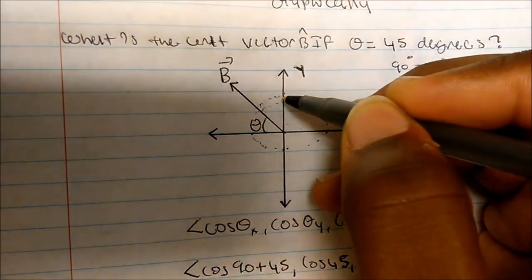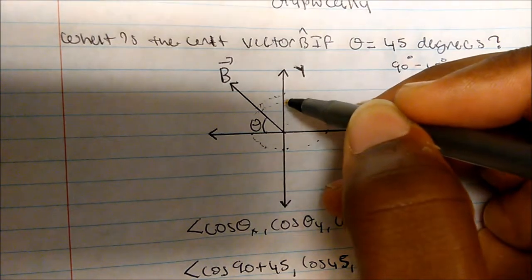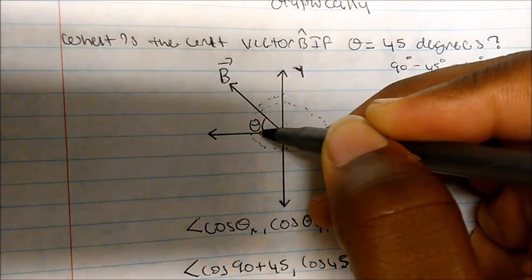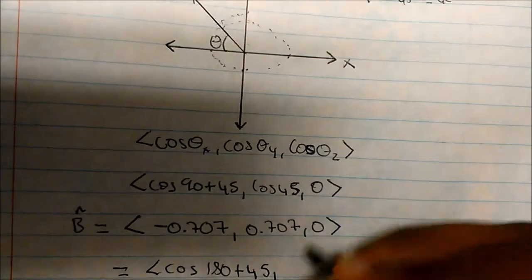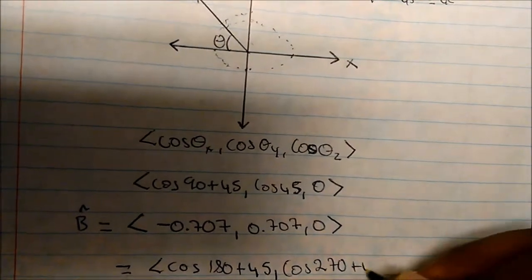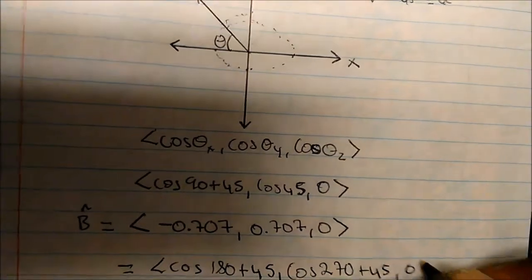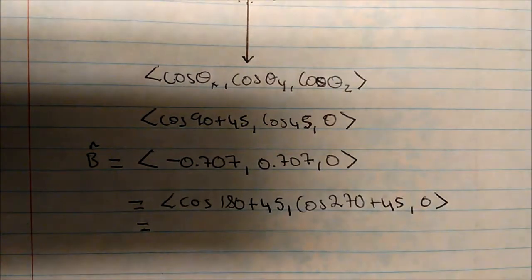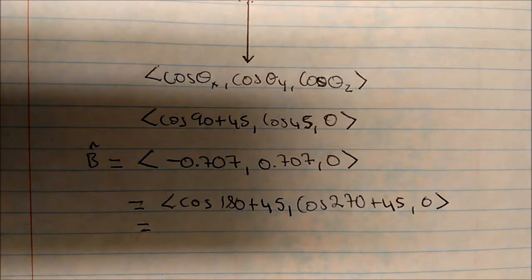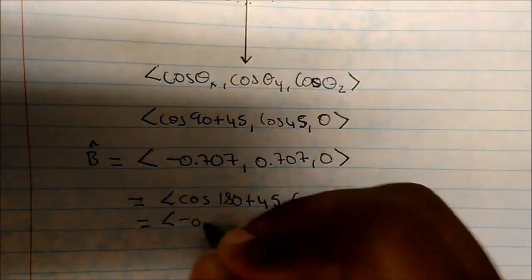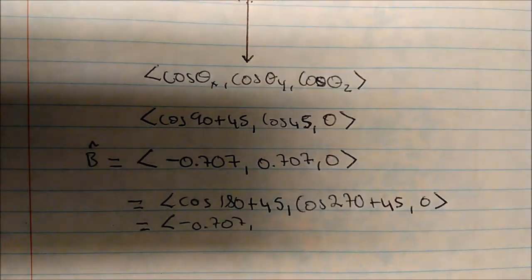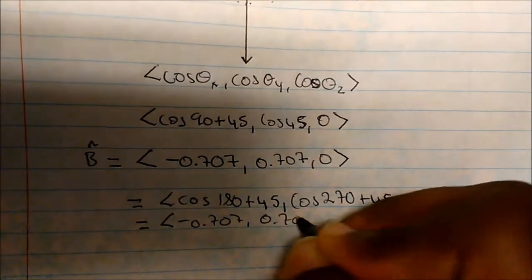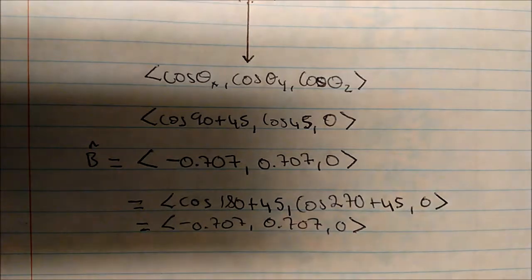What about the y-direction using this method? From the y, we go 90, 90, 90 — that's 270 — and then 45. So we take cosine of 270 plus 45, and we know it's 0 in the z-direction. Cosine of 180 plus 45 gives negative 0.707, cosine of 270 plus 45 gives 0.707, and z is 0.